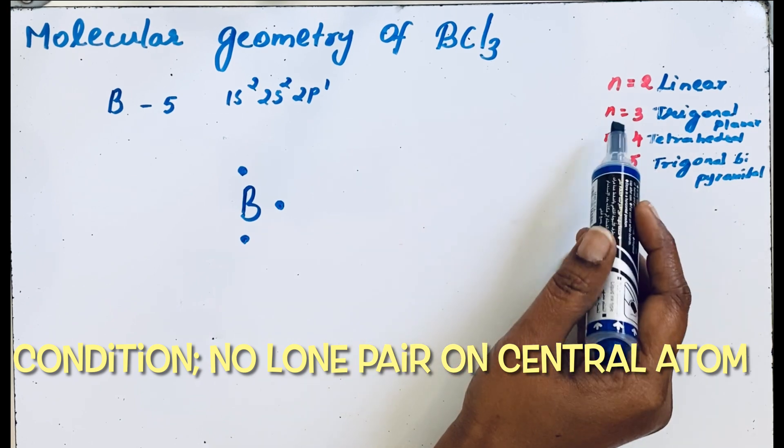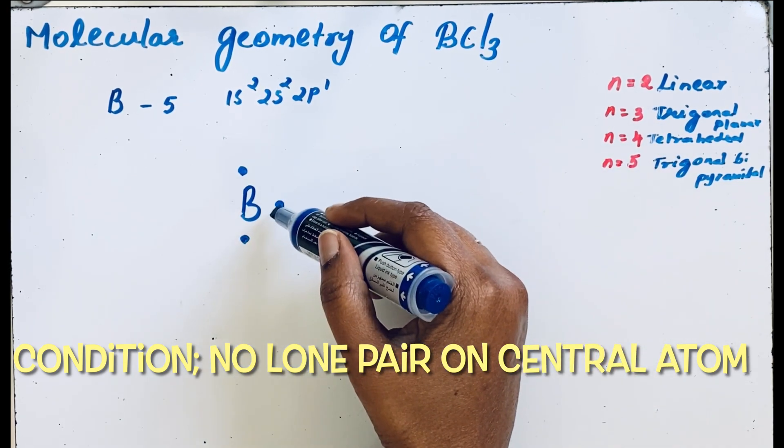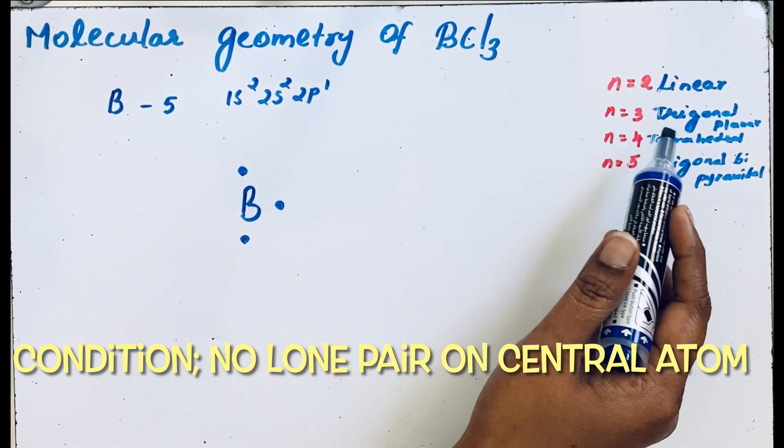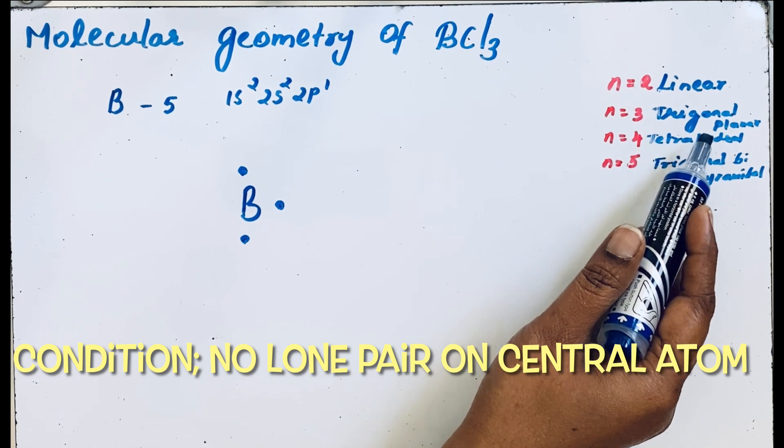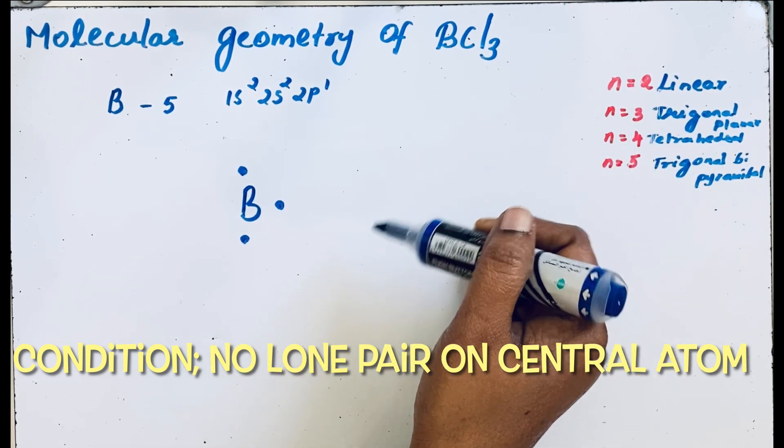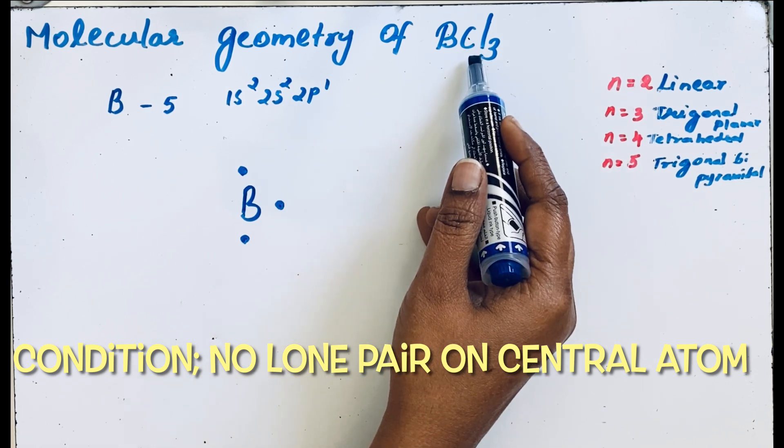In BCl3, since there are three bond pairs that can be formed by the boron, the molecular geometry would be trigonal planar. Let us see very clearly: in BCl3 there are three chlorine atoms.